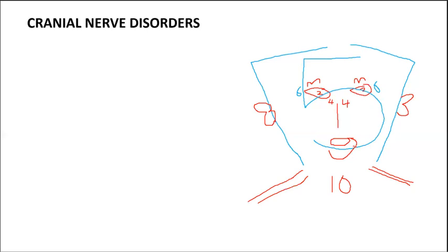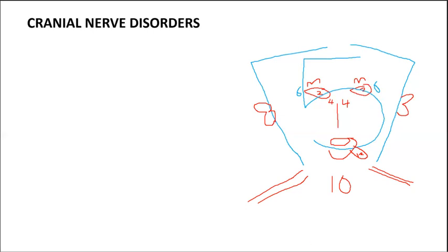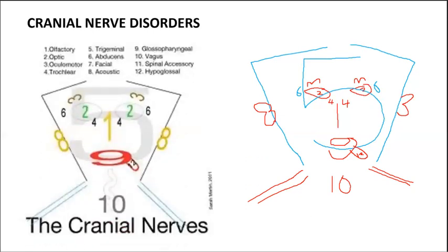Cranial nerve twelve is like this figure sticking out his tongue — that's the hypoglossal nerve. It serves the muscles of the tongue for swallowing and speech. That's one way to memorize your cranial nerves using the face drawing mnemonic.